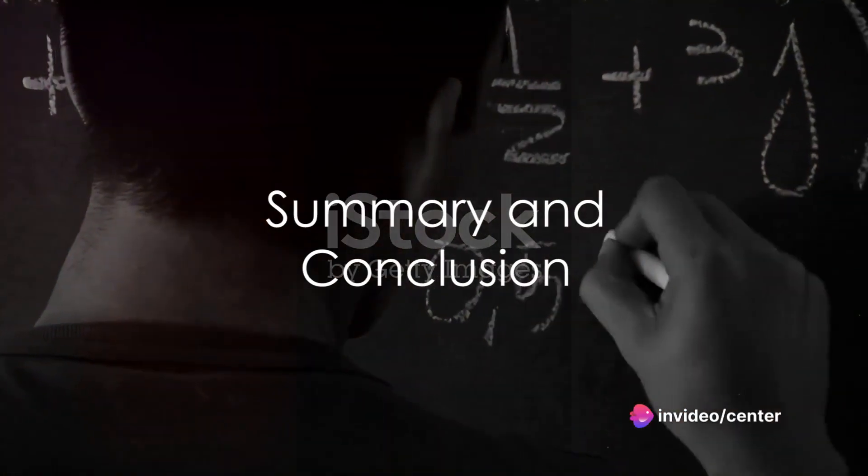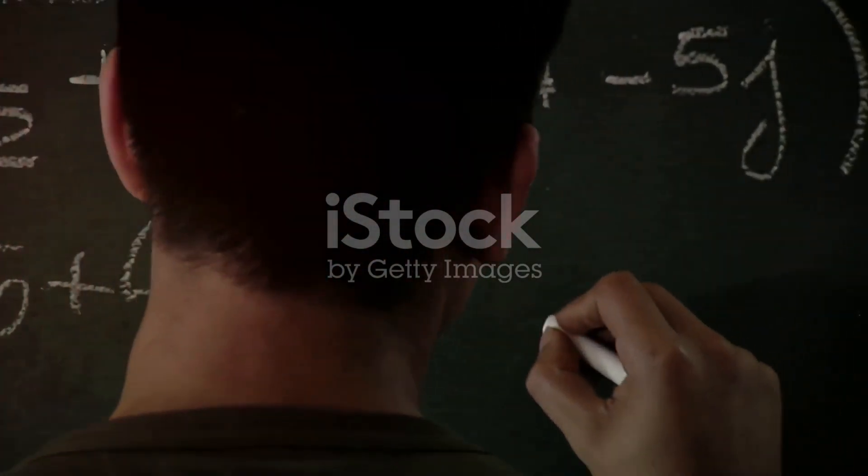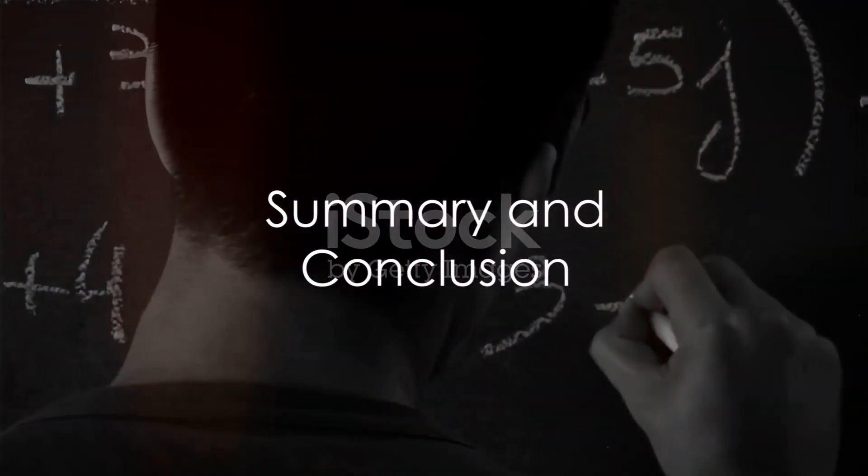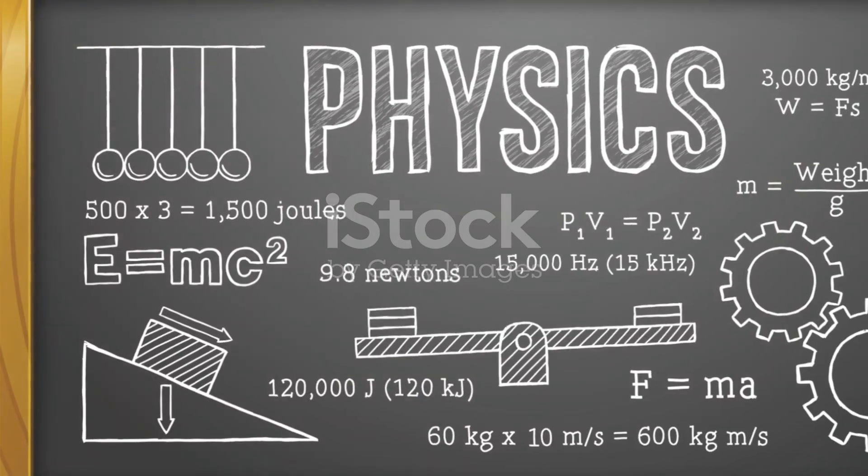In summary, the dot product is an algebraic operation that takes two equal length sequences of numbers and returns a single number. It has several useful properties, including commutativity, distributivity, associativity, and linearity.